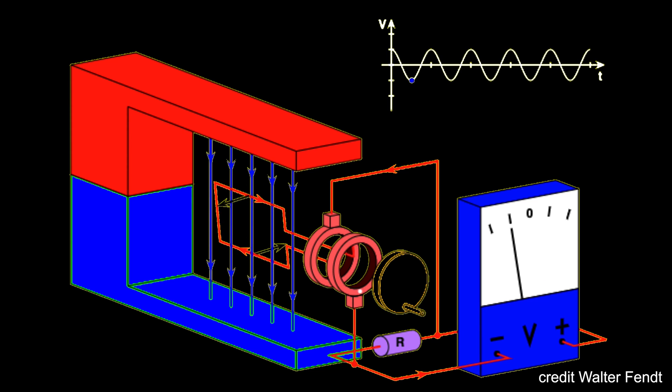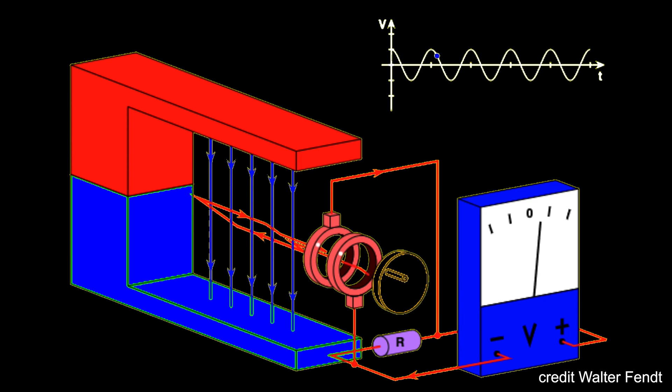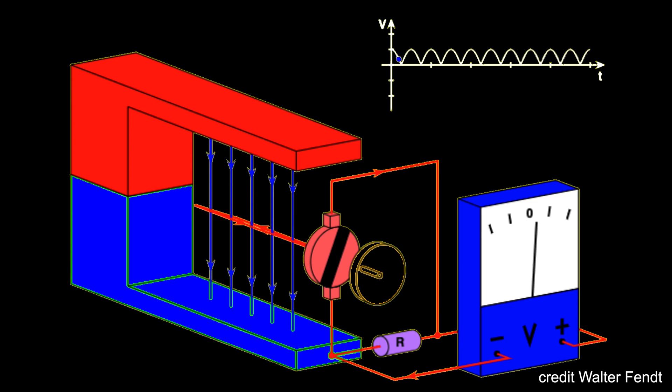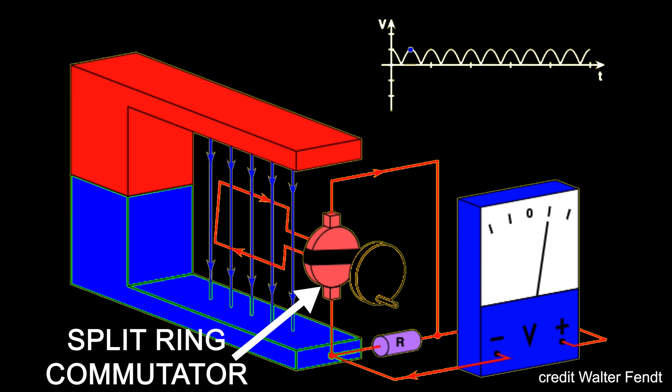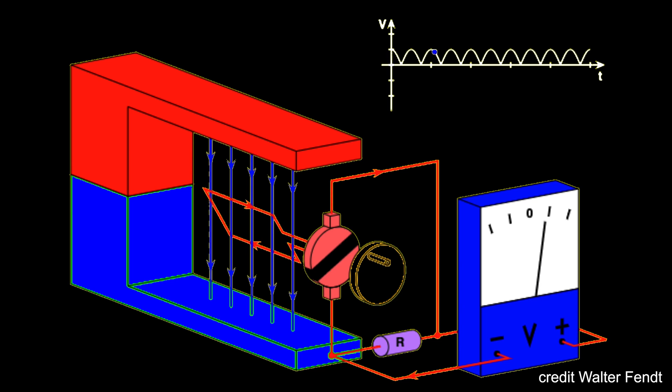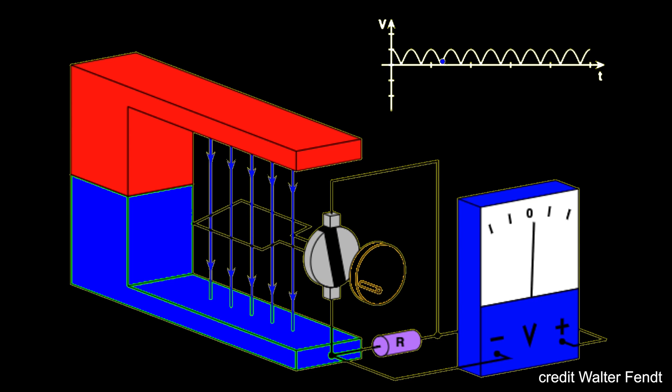And so that explains alternating current. But can we produce a direct current, or DC? The answer is yes, and all we need to do is somehow switch the current every 180-degree turn. In the alternating configuration the coil is connected to an external circuit by way of what's referred to as slip rings. For a DC configuration we connect the coil to what is called a split ring commutator, which flips the current every half turn. The result is that every half rotation the voltage and therefore the current maintains a constant direction, and therefore we have a direct current.